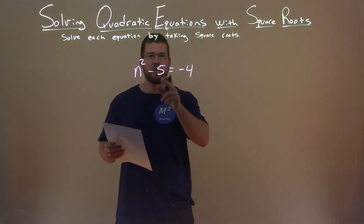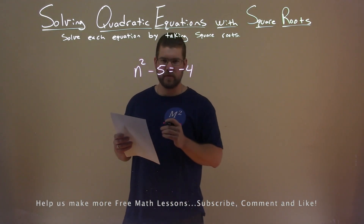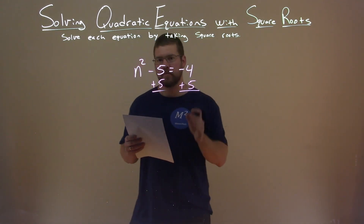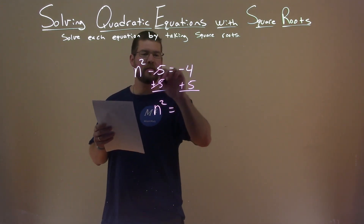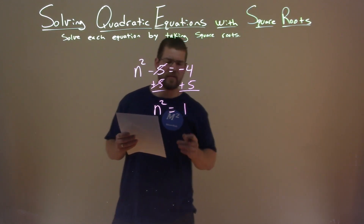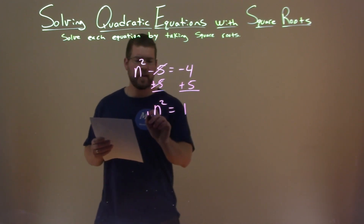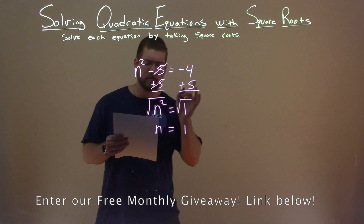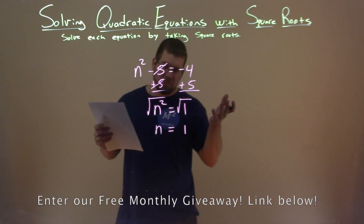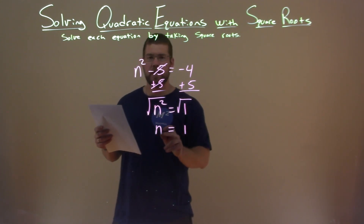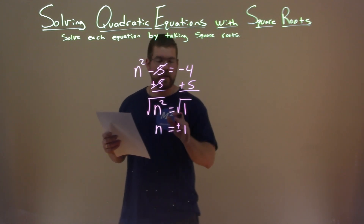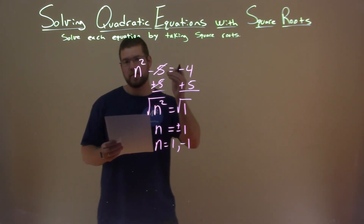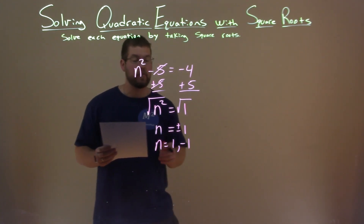We're given n squared minus 5 equals negative 4, and we want to solve this equation by taking square roots. First, I'm going to add 5 to both sides. The 5s cancel, leaving n squared by itself, and negative 4 plus 5 is positive 1. So we have n squared equals 1. We still need to take the square root of both sides. The square root of 1 is 1, but don't forget — square root over the equal sign makes it plus or minus. So n equals a positive 1 and a negative 1. Both values, when plugged into our original equation, make it true. Final answer: n equals positive 1 and negative 1.